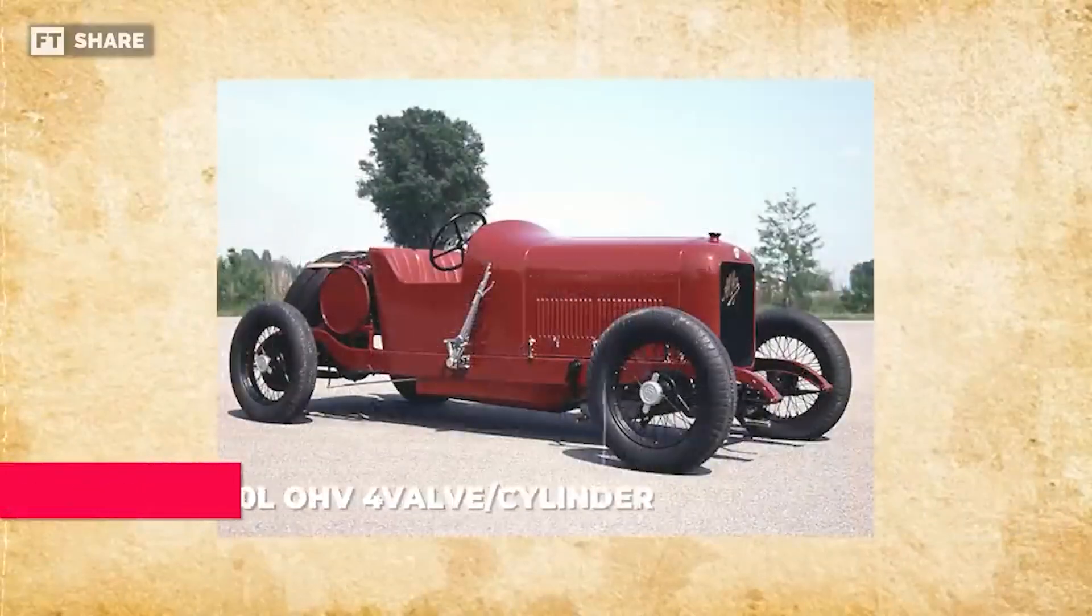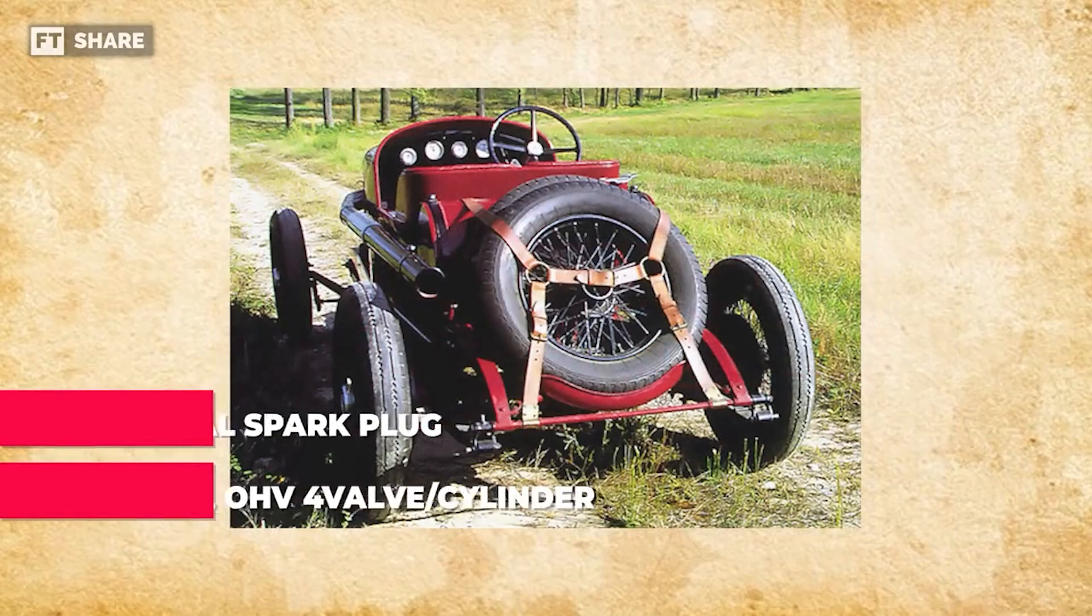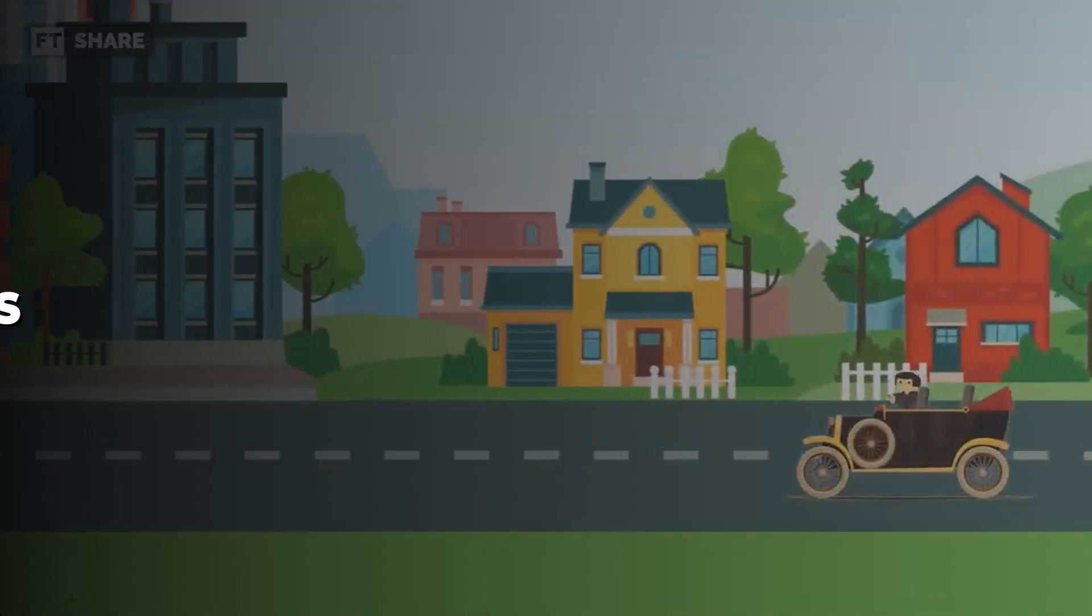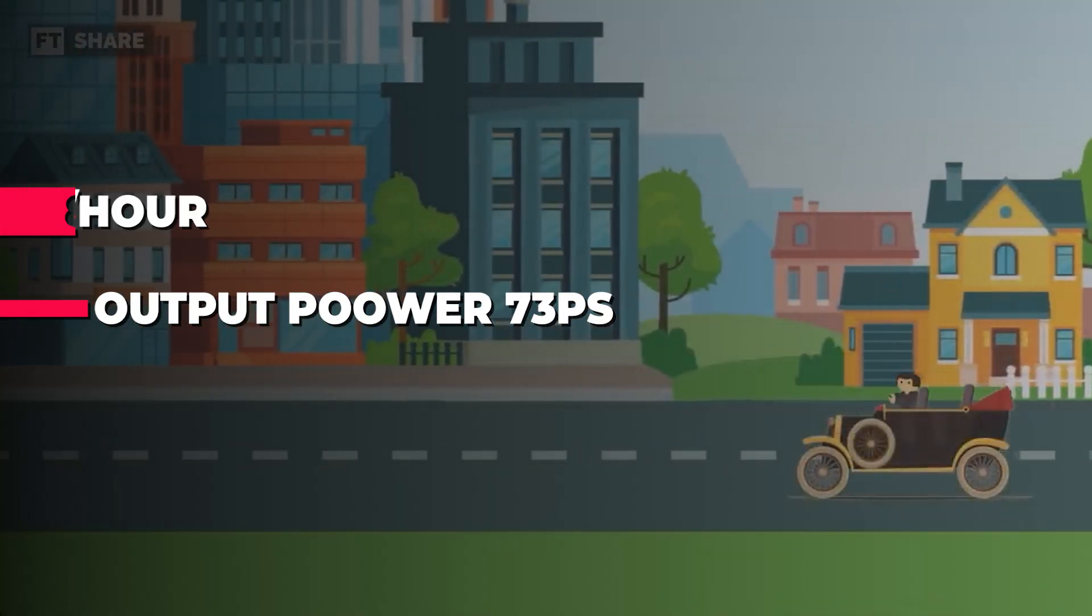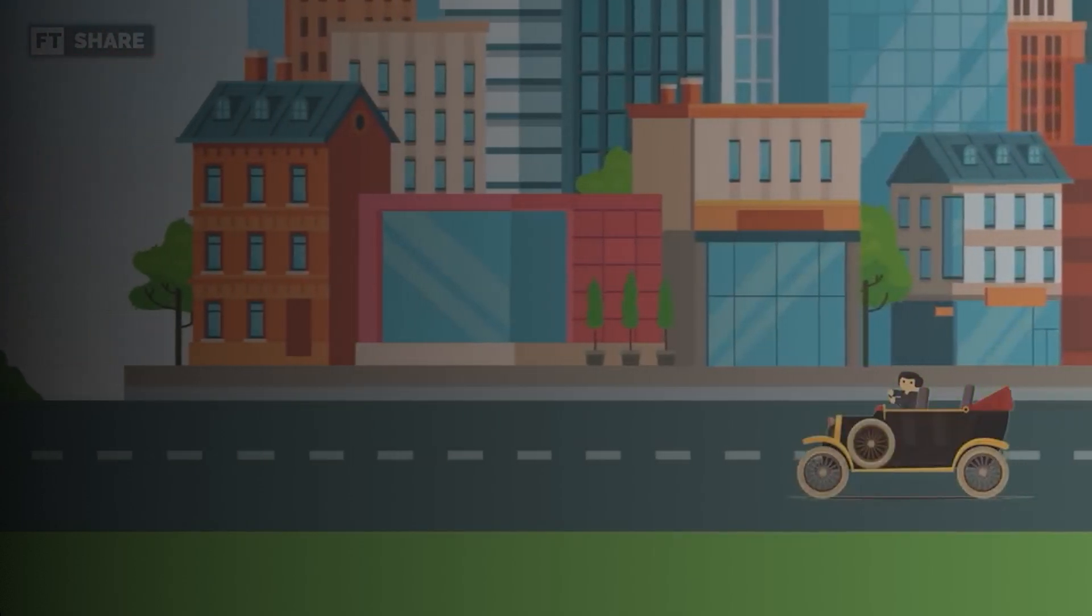The engine had a capacity of 6 liters OHV with four valves per cylinder at a 90-degree angle and dual spark plugs. It produced 73 PS and could reach 85 mph. It's impressive that this was achieved 110 years ago.